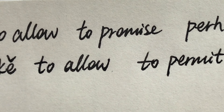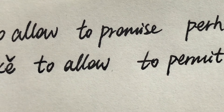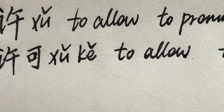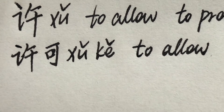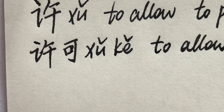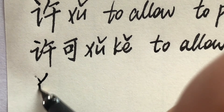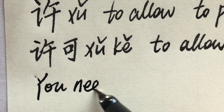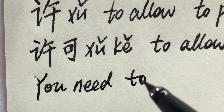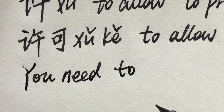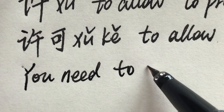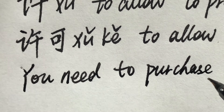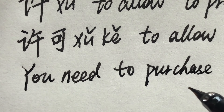For example, you need to purchase the license. 你需要购买许可。 You need to purchase the license.